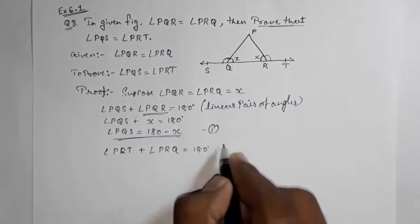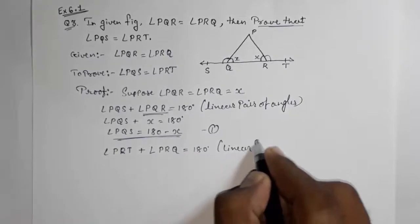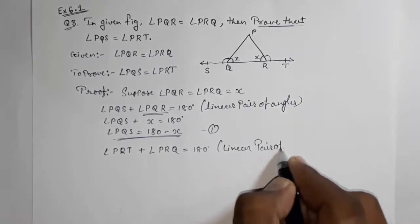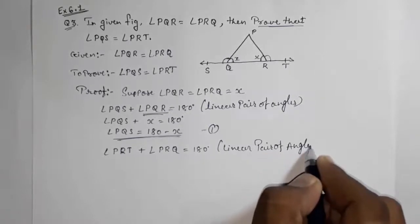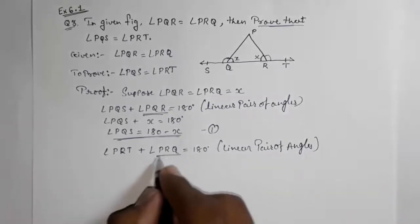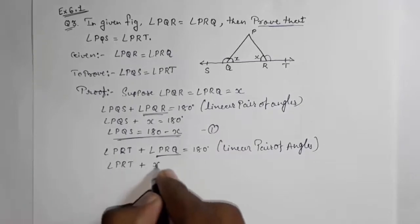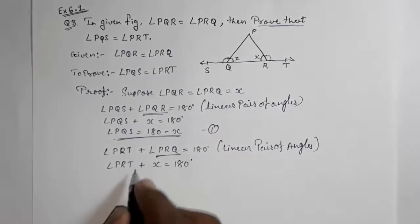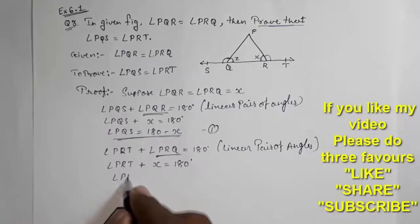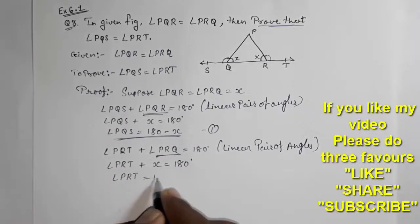Because of linear pair of angles, now again we are going to put x in this place. Angle PRT plus x is equal to 180 degrees. Now we will take this x on that side: angle PRT is equal to 180 minus x.